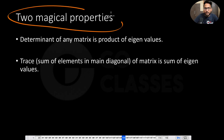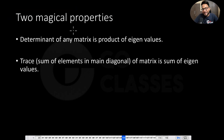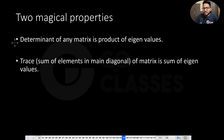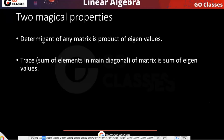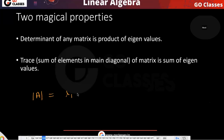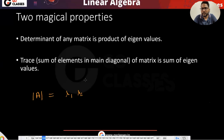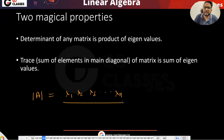Let's now look at these two magical properties. I am calling them magical properties but there is nothing magic about it — both of these properties have some proof to follow. So let's start with the first property: the determinant of any matrix is a product of its eigenvalues. Which means if there are n eigenvalues, it is lambda 1 into lambda 2 into lambda 3, and so on till lambda n.